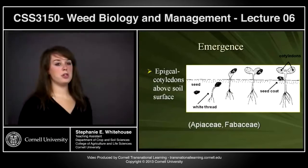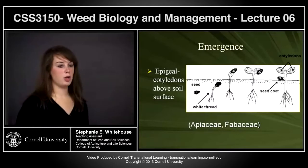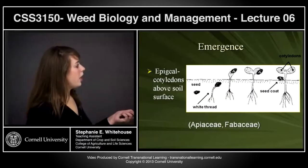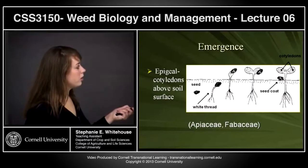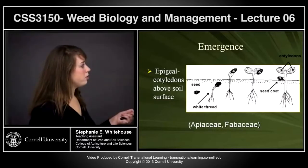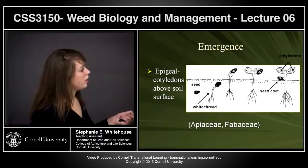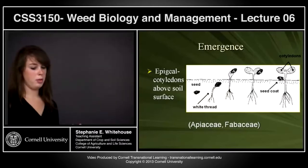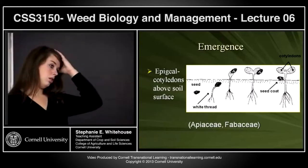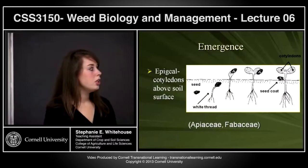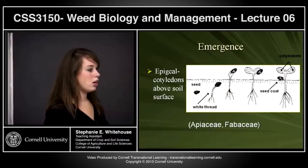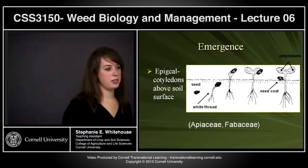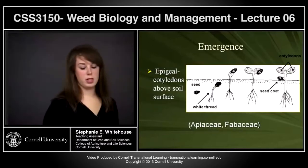Epigeal growth means the cotyledon emerges from the soil. You'll have the radicle develop underneath, then the cotyledon emerges along with the seed, the two cotyledons develop, the seed falls off, and you have the coleoptile above ground. Most dicots show epigeal growth. Some Fabaceae are epigeal and others are hypogeal — for example, peas are hypogeal even though they're in the Fabaceae family.